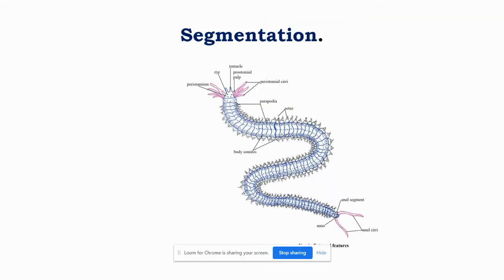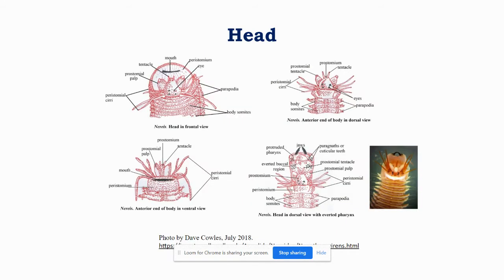The body is divided into segments. The segmentation is known as metameric segmentation because all the segments are alike. The body can be divided into three parts: the head, trunk and anus. The head region comprises of two segments, the prostomium and the peristomium. Pro means before and stoma is mouth. As the name suggests this segment of the body lies before the mouth. Although it is not a true segment, this is a larval segment that is retained in the adult body.